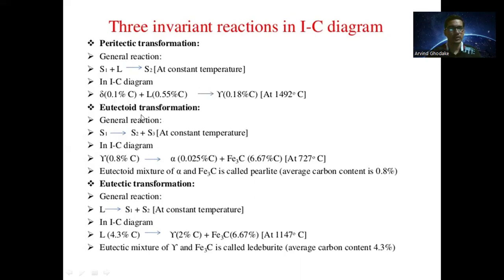The second transformation is the eutectoid transformation. The general reaction is: one solid S1 gives S2 plus S3 at constant temperature — meaning from the solid state it produces two other solids. In the iron-carbon equilibrium diagram, solid one is austenite containing 0.8 percent carbon, which gives alpha ferrite (solid two) and cementite Fe₃C (solid three). Alpha ferrite has 0.0025 percent carbon and cementite has 6.67 percent carbon.